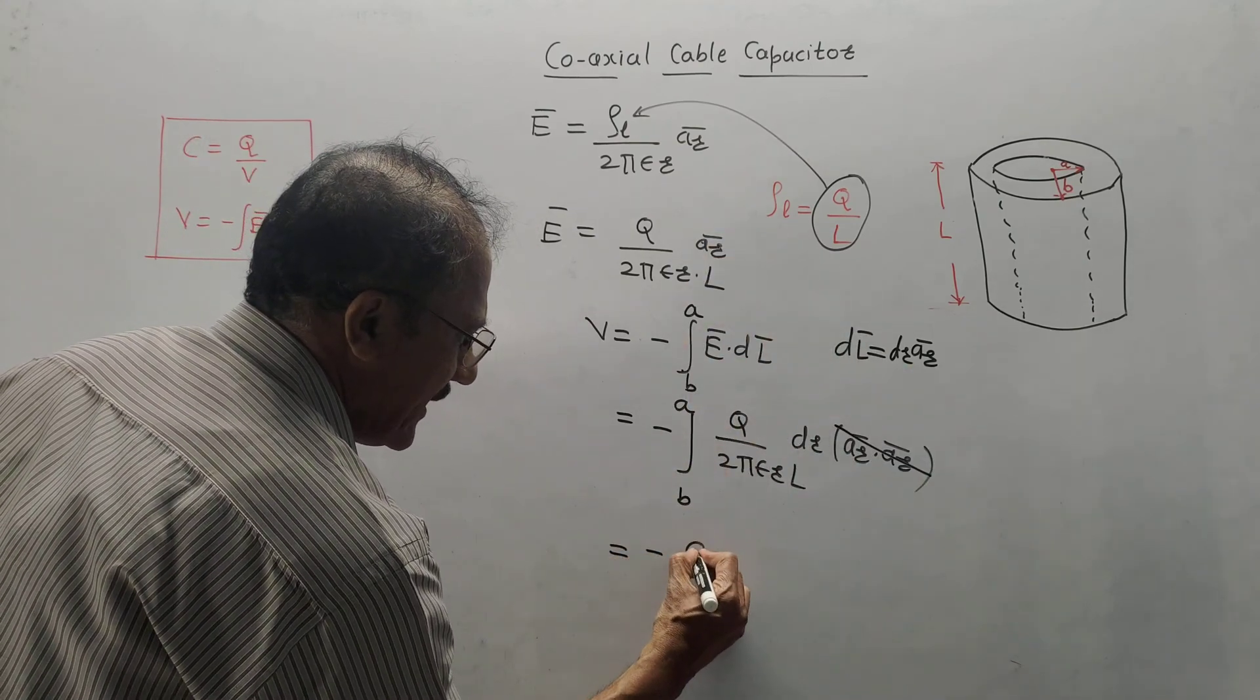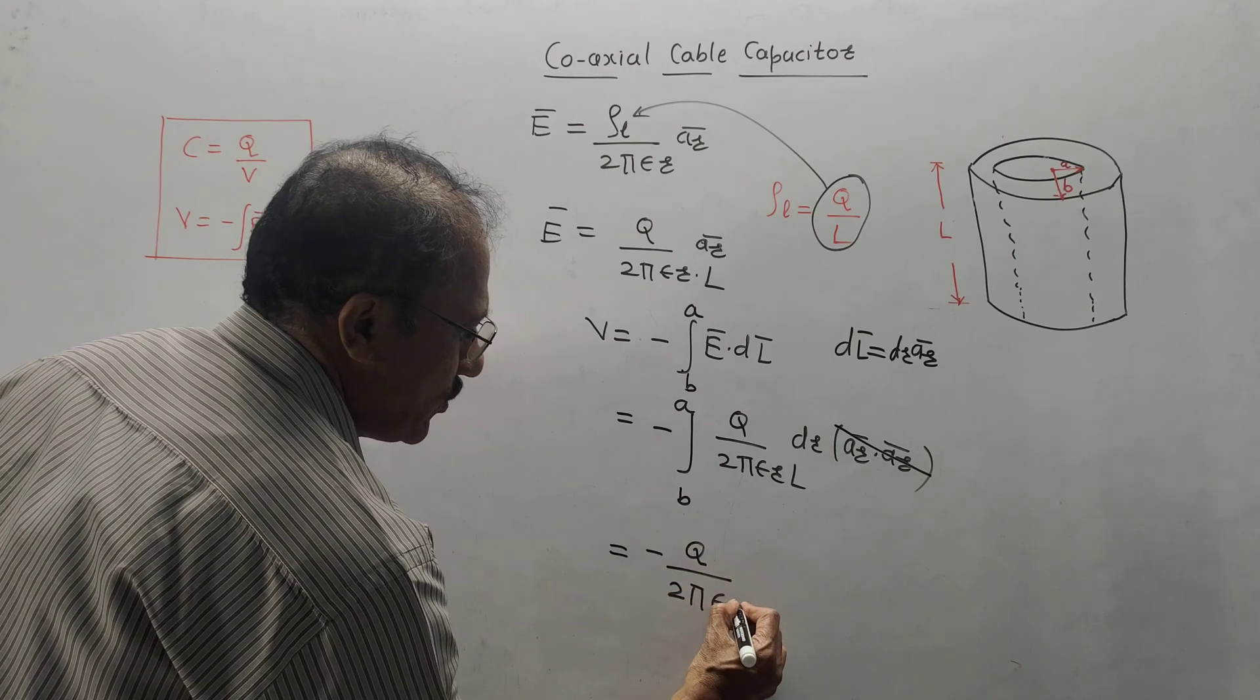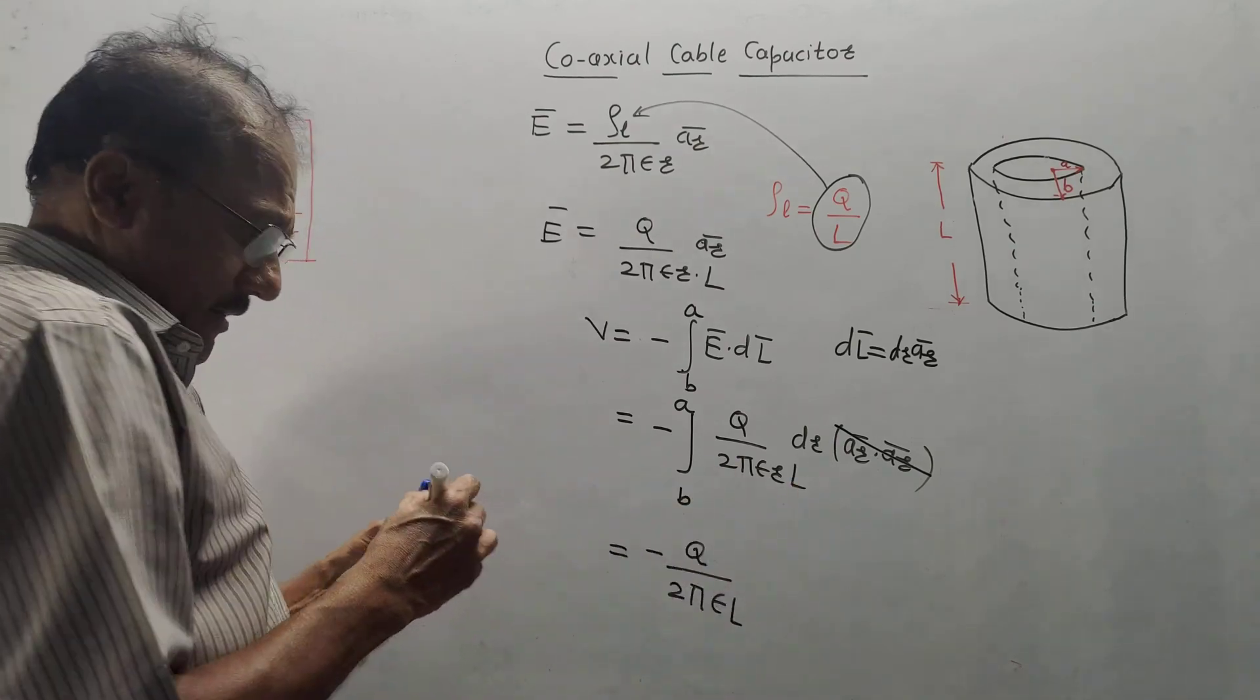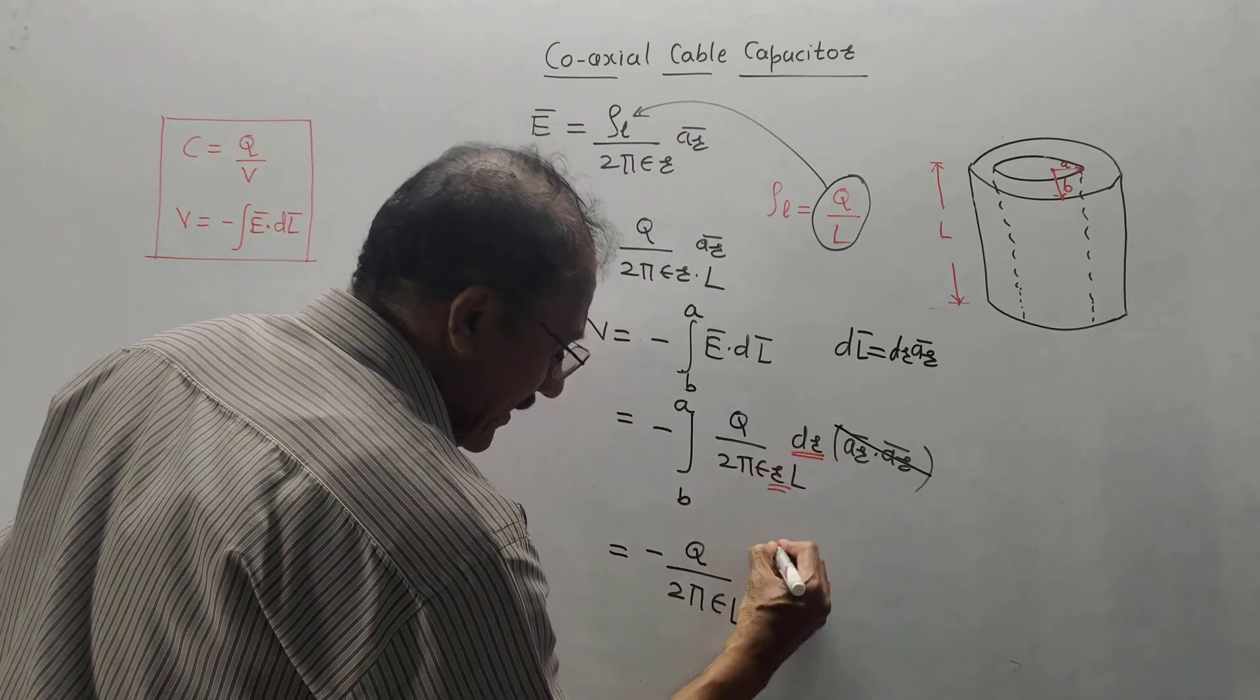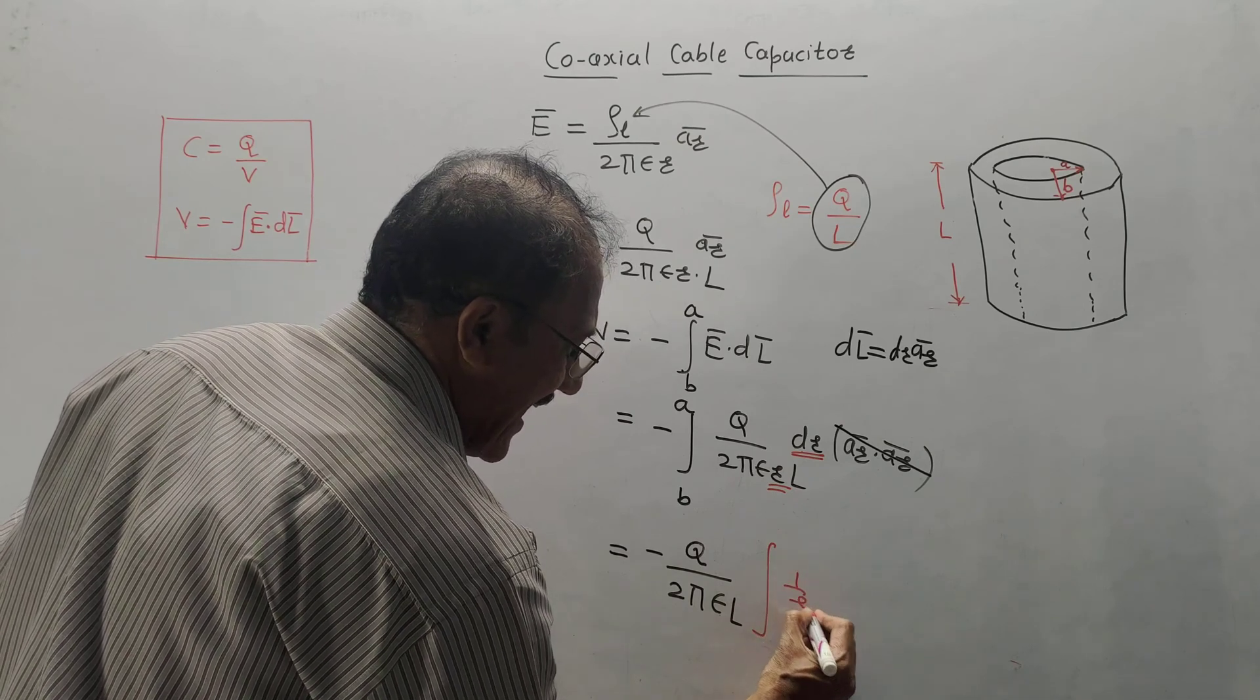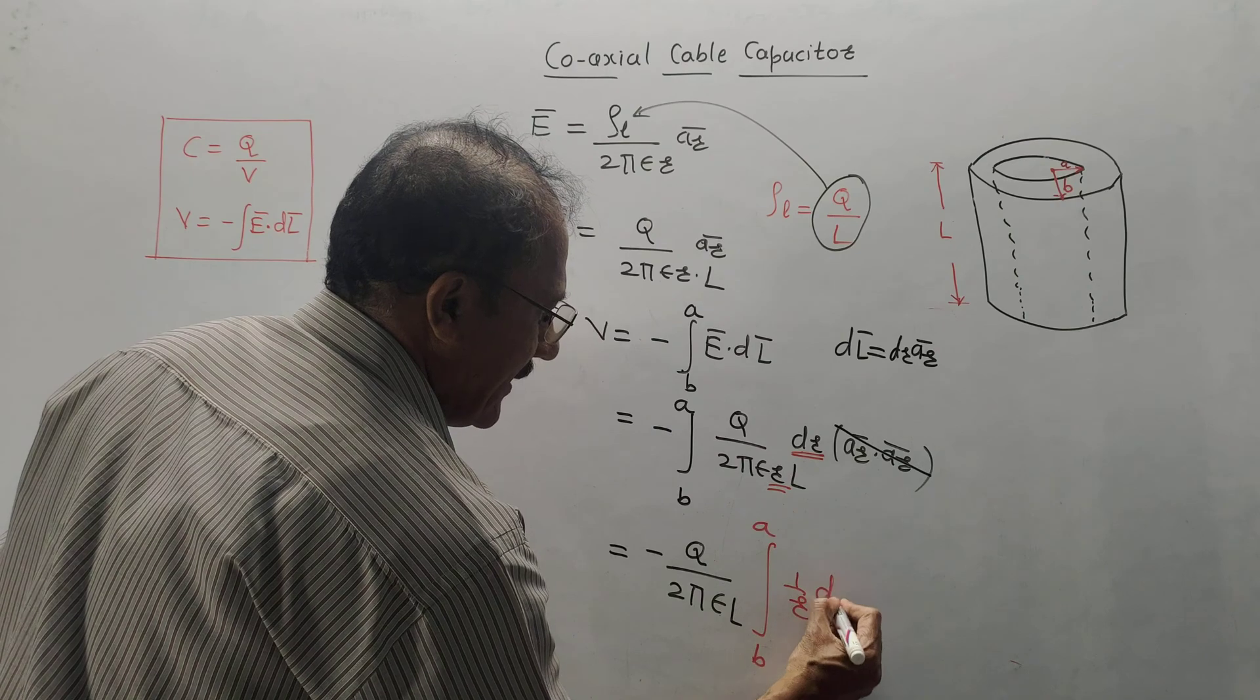If I will take constants outside, it becomes minus Q upon 2 pi epsilon L. Keep in mind this integration, variable of integration is R. So, 1 by R will remain in the integration as it is. Limits are B to A and it is D R.